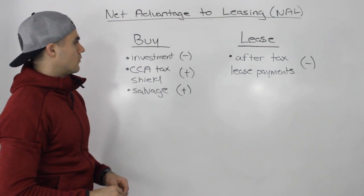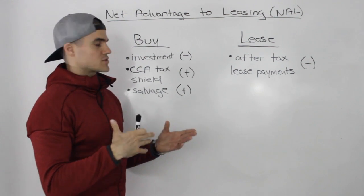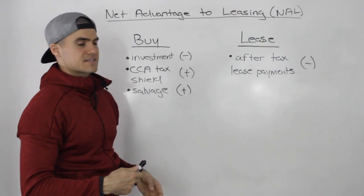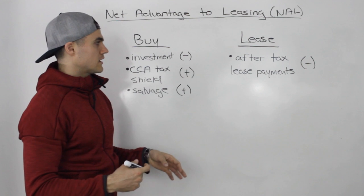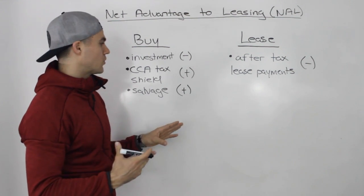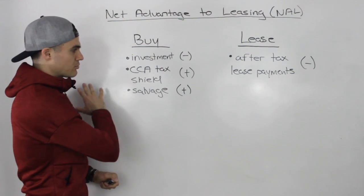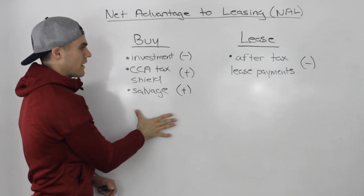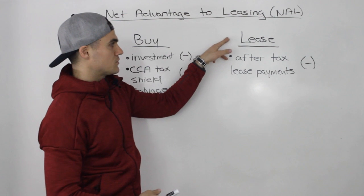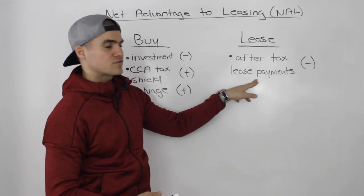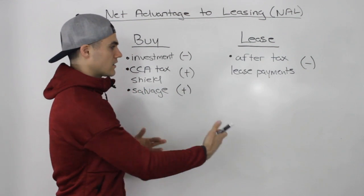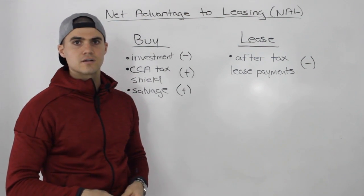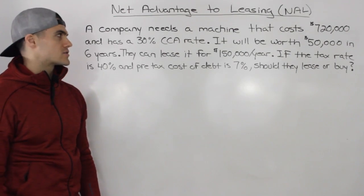Since we have the cash flows associated with both options, what we can do is find the net present value of all cash flows for buying an asset, find the net present value of all cash flows for leasing an asset, compare the net present values, and take whichever one is higher. Let's do an example to illustrate how this works.